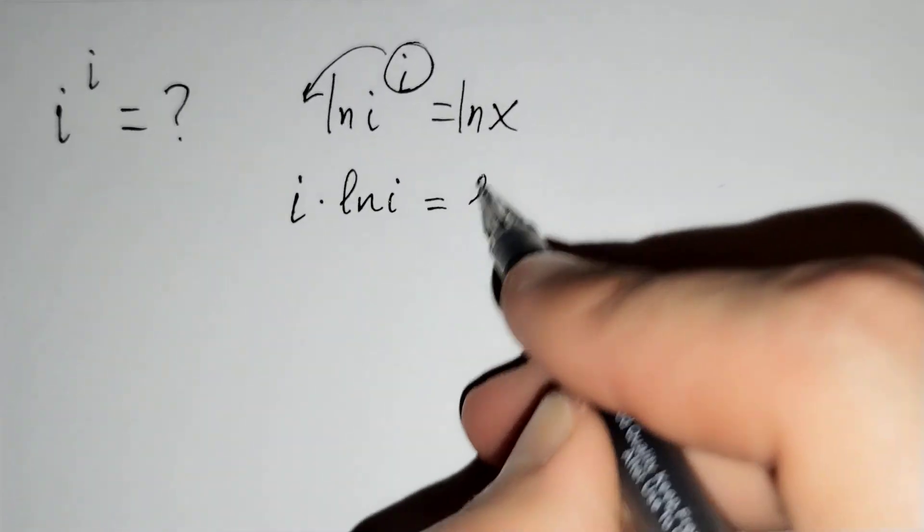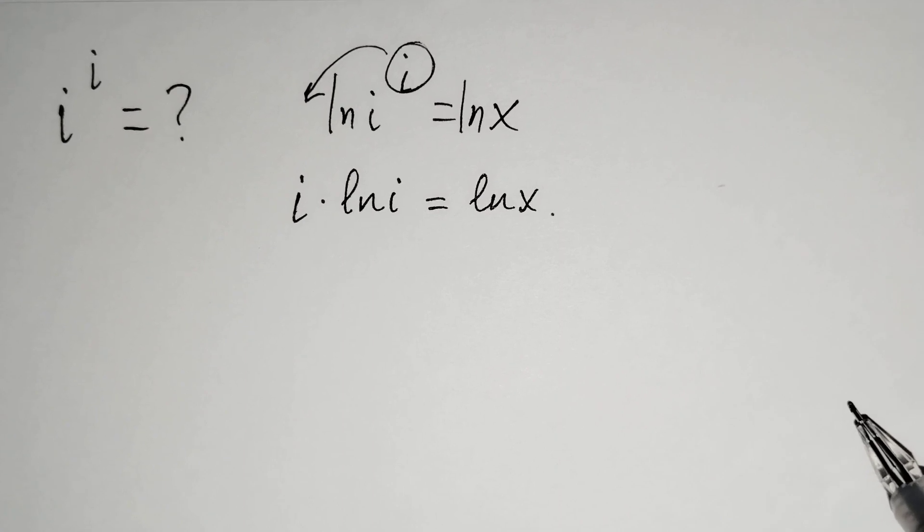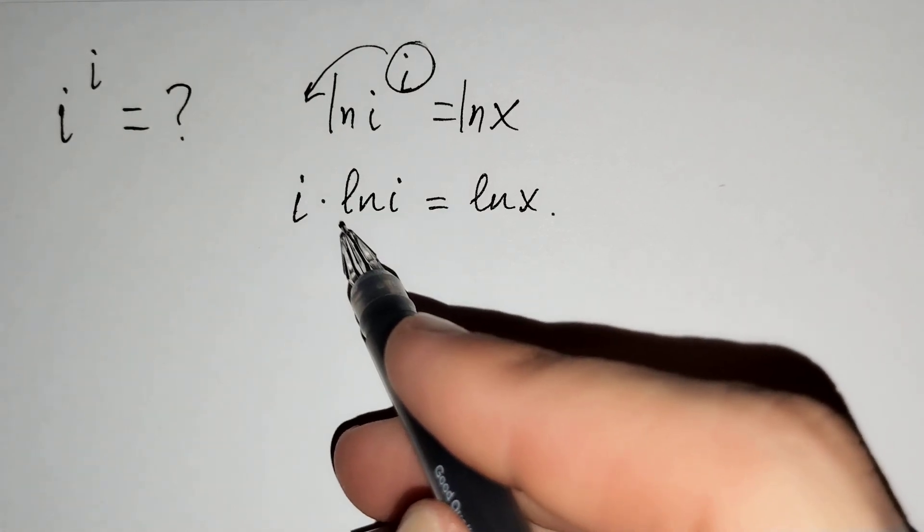We have i times ln i equals ln x. We want to find x, so firstly we should find ln i.